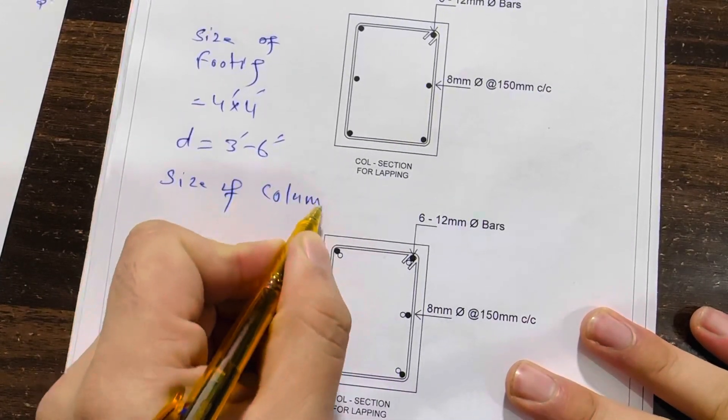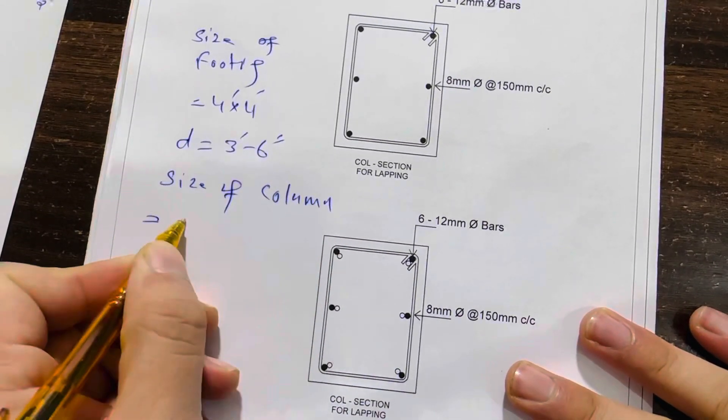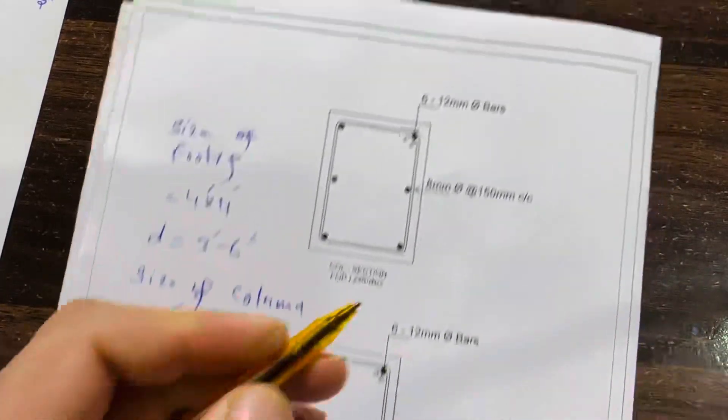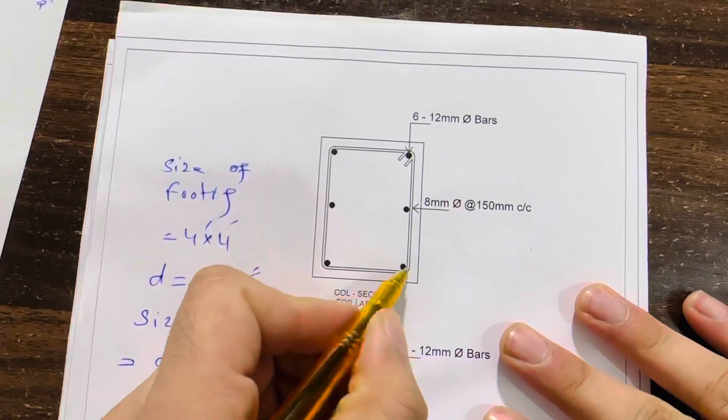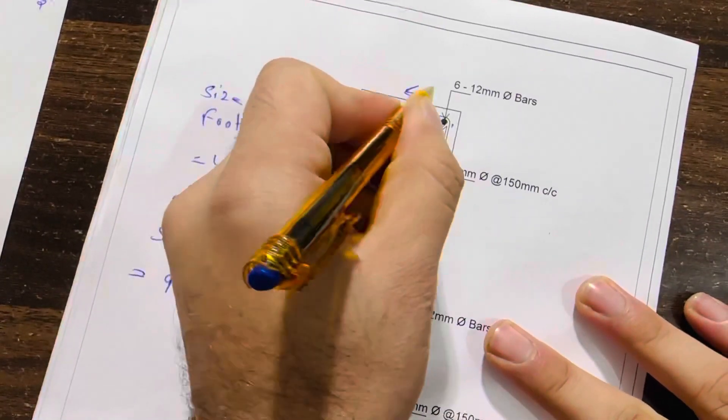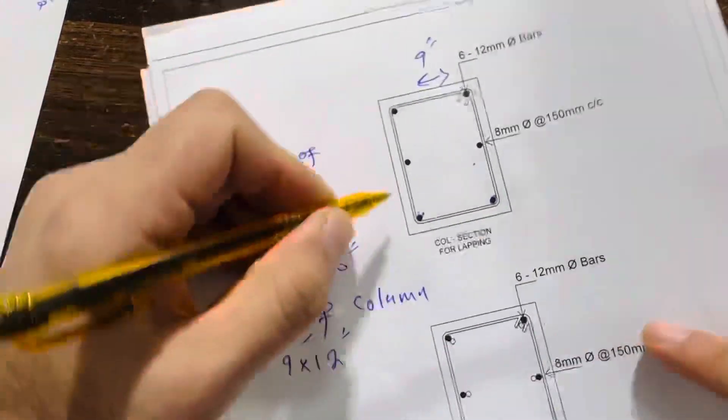Size of column is 9 by 12 inches. Here we have 6 numbers of steel rods. You can see clearly one, two, three, four, five, six numbers. This is 9 inches and this is 12 inches.